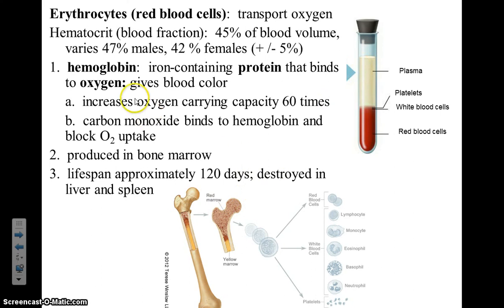The main job of hemoglobin is to pick up oxygen. However, hemoglobin also likes to bind to carbon monoxide, which is an odorless, colorless gas that acts as a toxin.